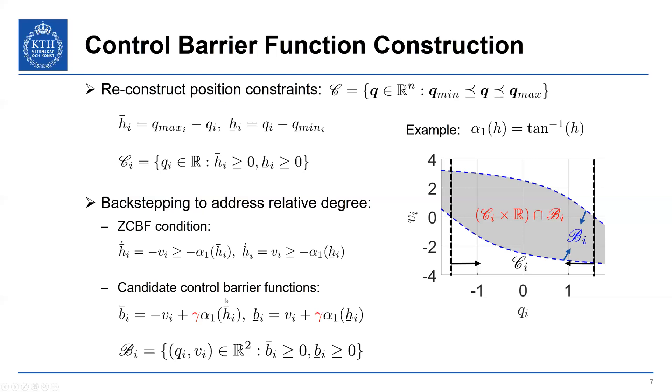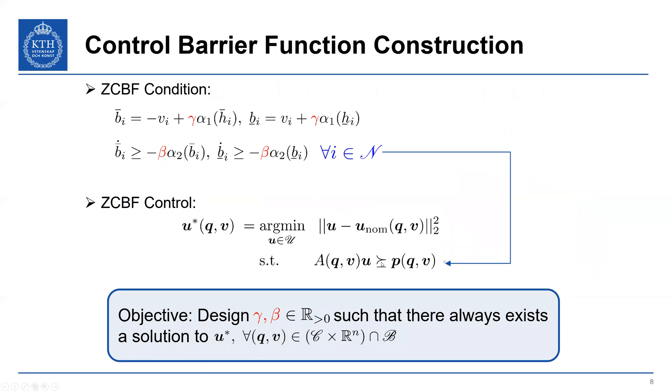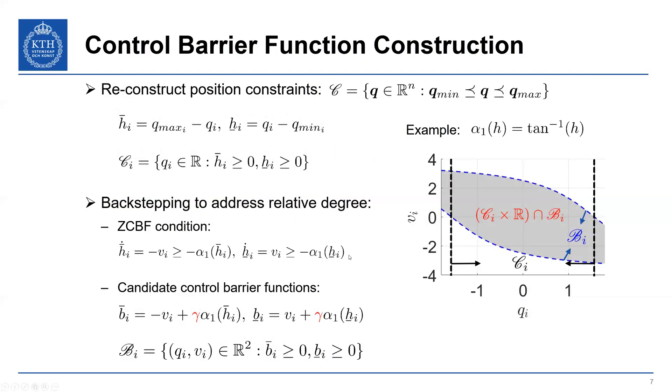So this b_i, upper and lower bar, we simply added alpha to the left-hand side of both cases. And what we want is both of these functions to now be non-negative because that means that the ZCBF condition here is satisfied, which means we get forward invariance of this set C_i. So what we do is now we define the set B_i, which is where both of these candidate control barrier functions are non-negative.